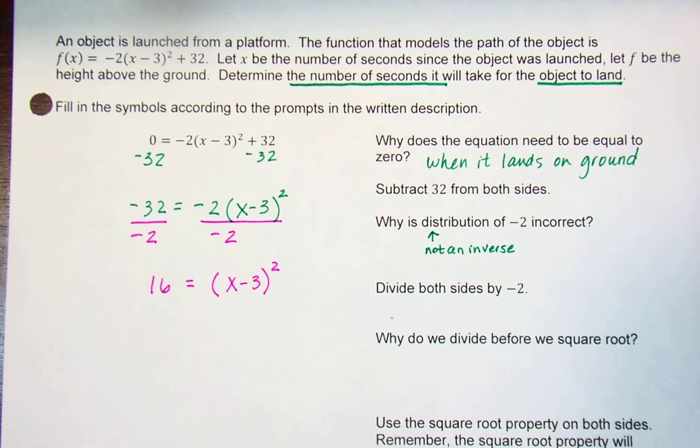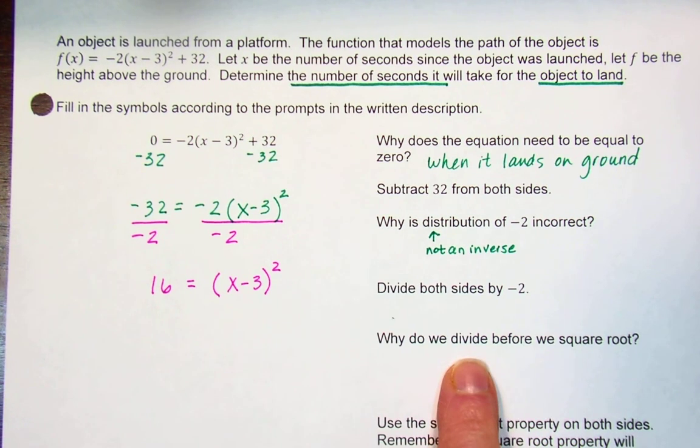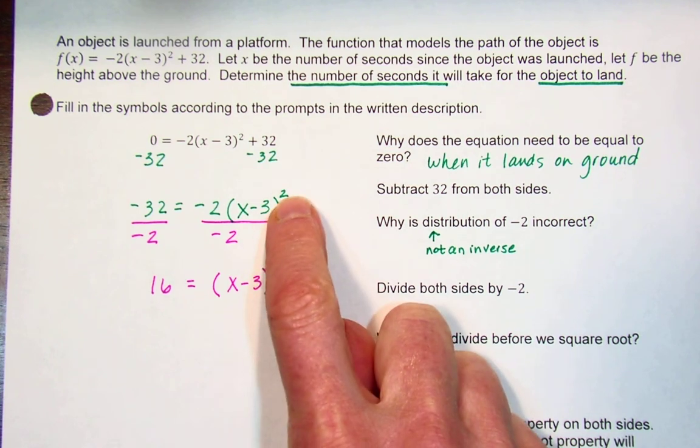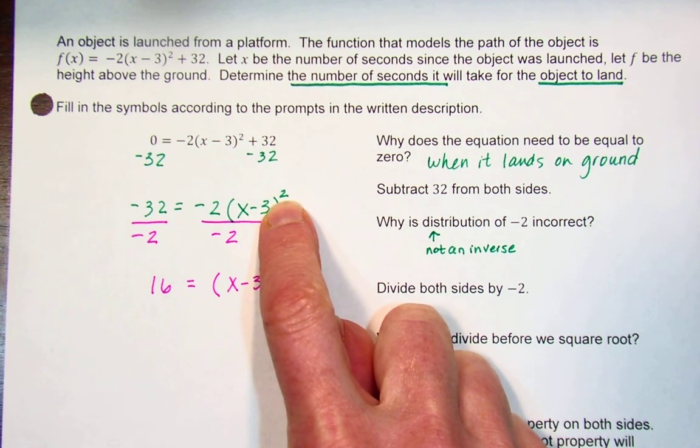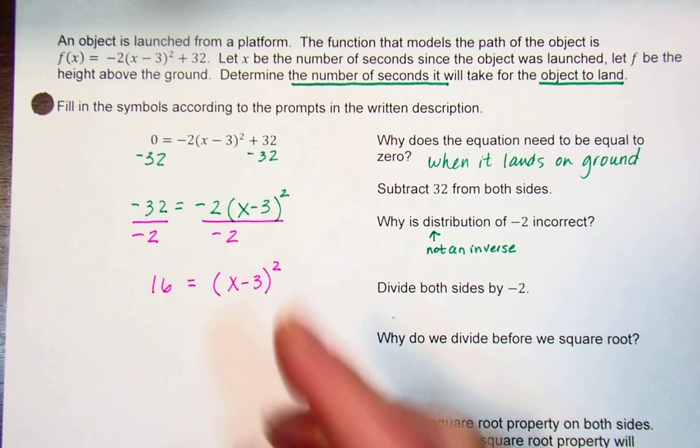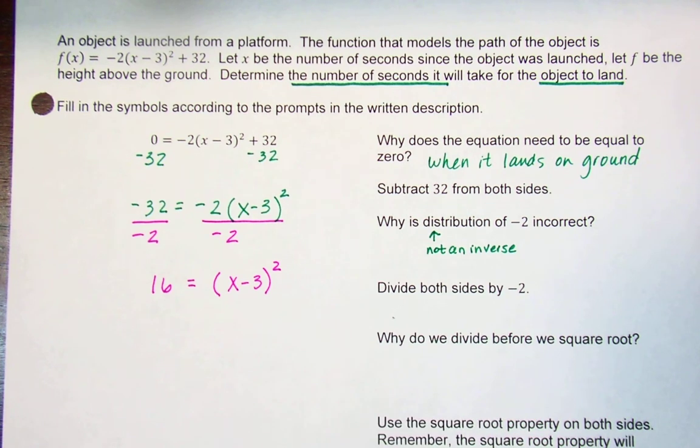Why do we divide before we square root? Because we would have had to apply this exponent first and then divide. So if we're undoing that with inverses, then we undo the multiplication before the exponent. We're going backwards.